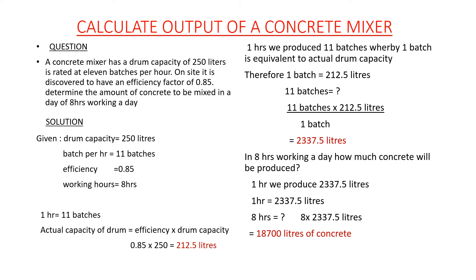In one hour we produce 11 batches, whereby one batch is equivalent to the actual drum capacity. When we talk of a batch, that is what you load, then mix, then discharge. Once you've done one discharge, that is one batch. So at the end of one hour we are doing 11 discharges of concrete. Therefore one batch is equivalent to 212.5 liters — this is what one batch is able to produce.